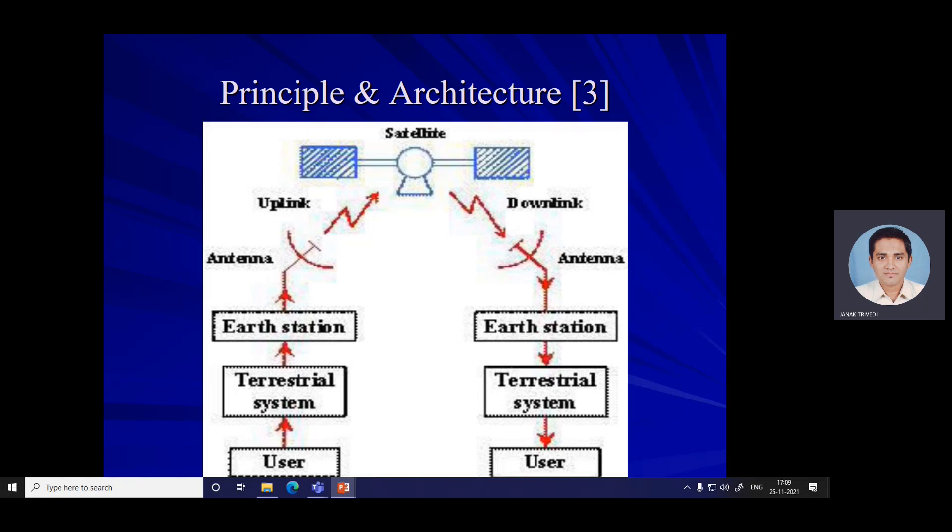A satellite is a body that moves around another body in a mathematically predictable path called an orbit. A communication satellite is nothing but a microwave repeater station in space that is helpful in telecommunication, radio, and television, along with internet applications.